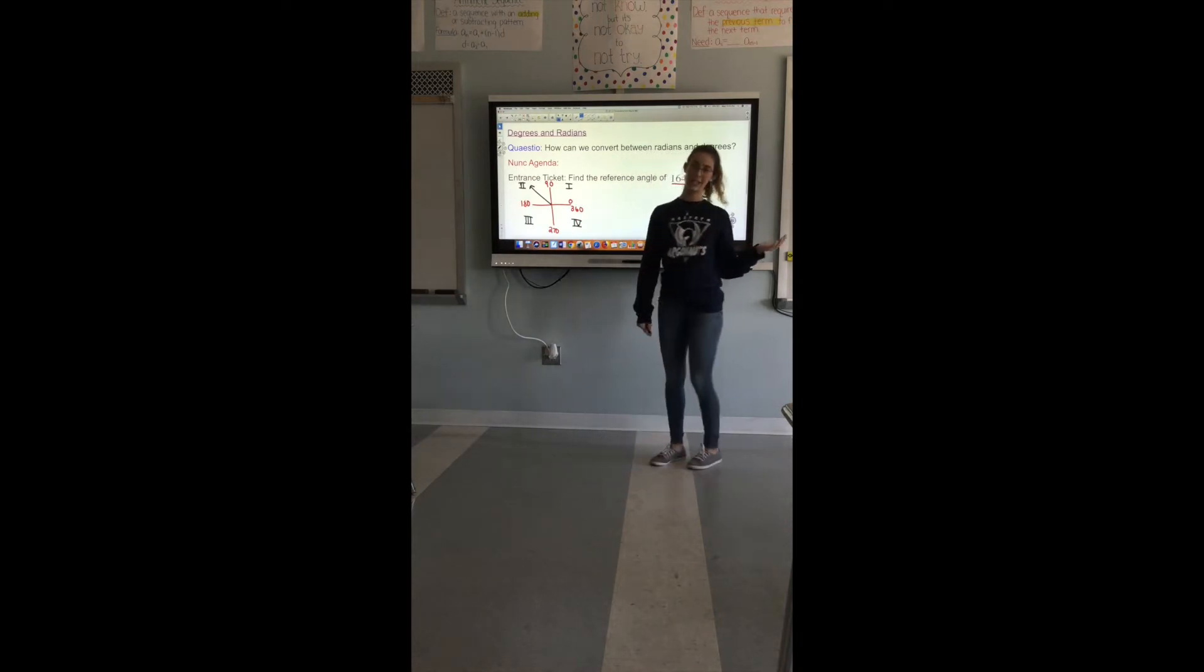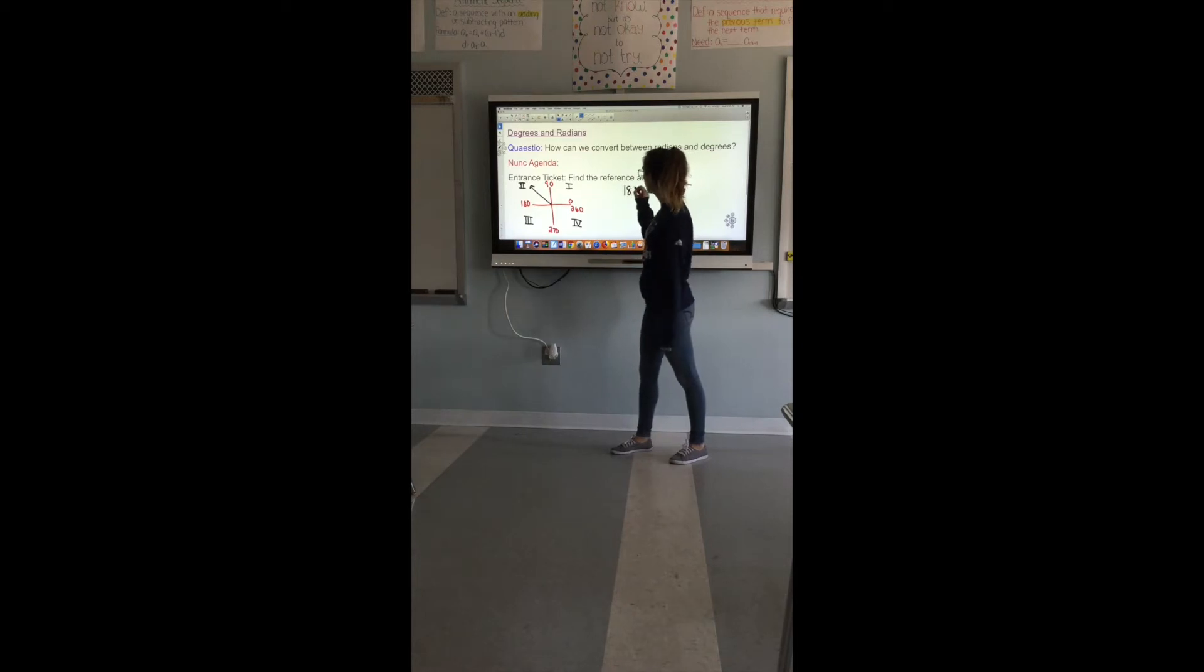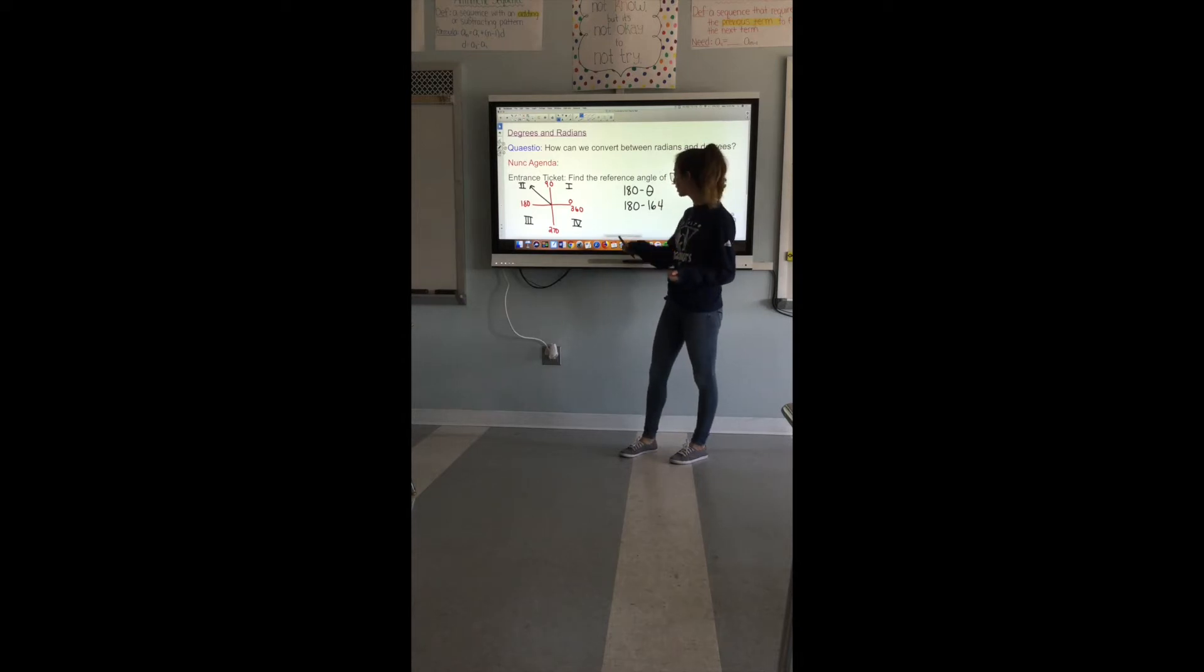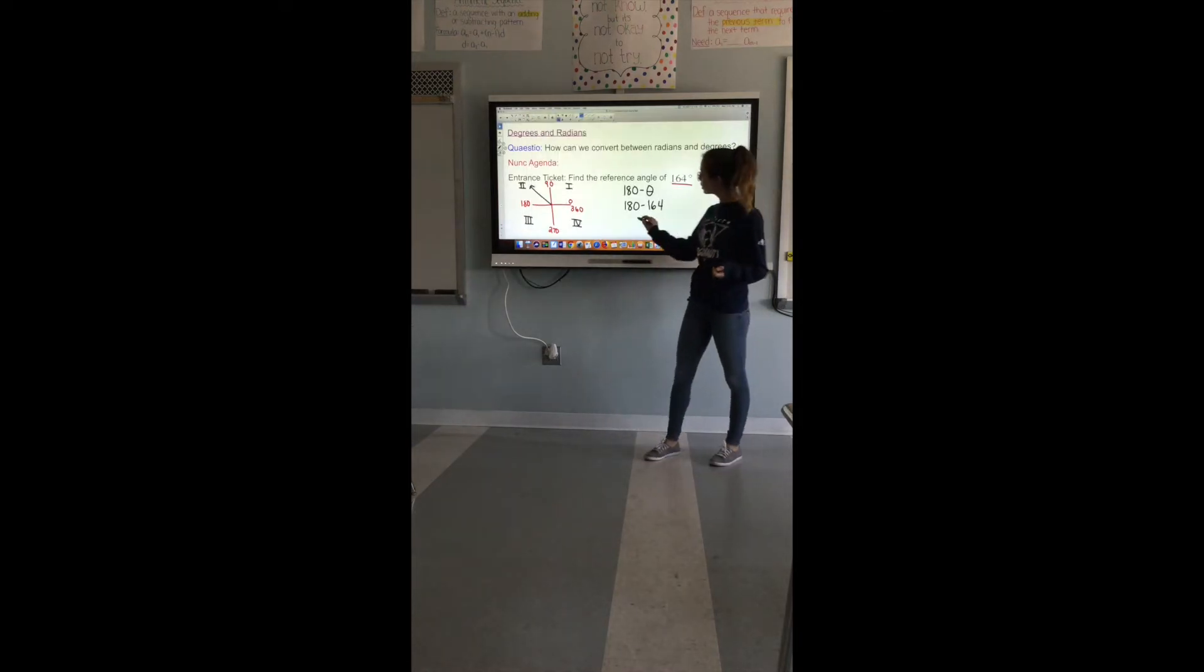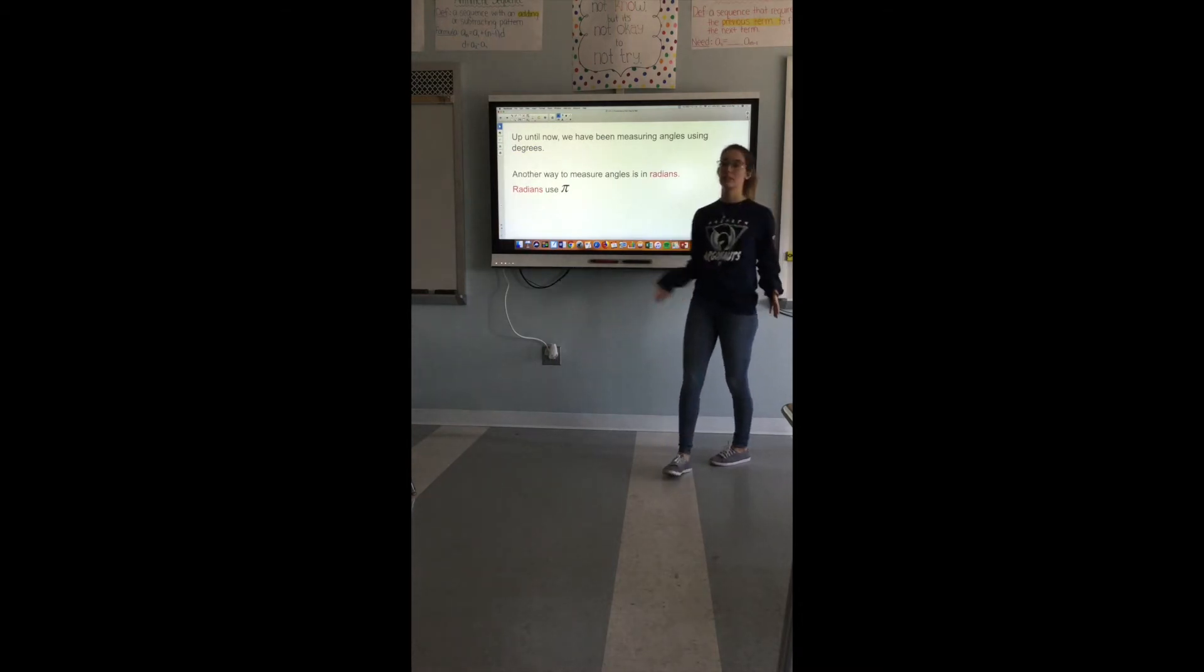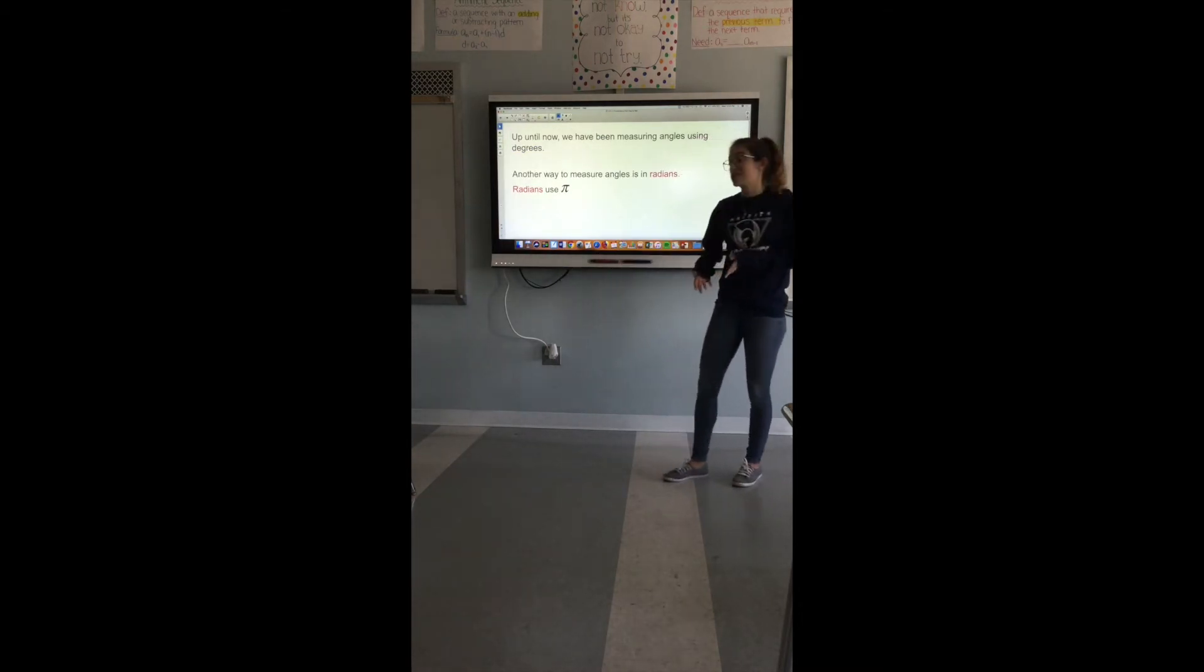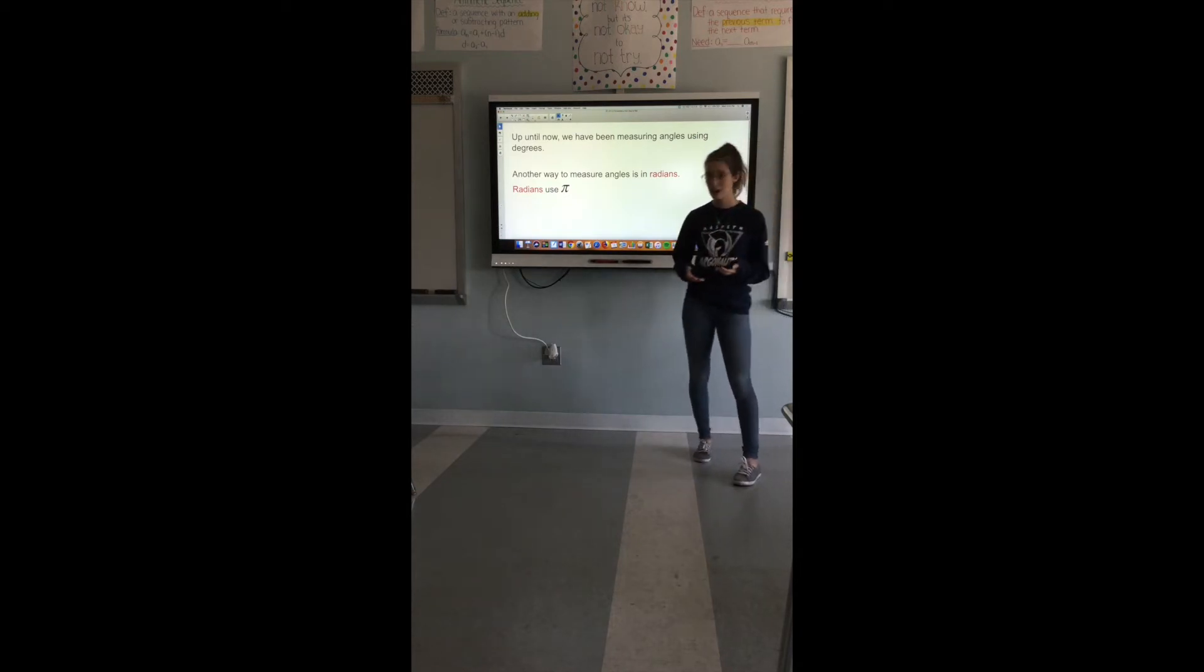There were rules that you were given yesterday to see how to find the reference angle. In quadrant two you have to do 180 minus theta. Theta represents your angle so in this case we have to do 180 minus 164. You can pull up your calculator, 180 minus 164 and you'll get 16. So our reference angle here is 16 degrees.